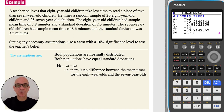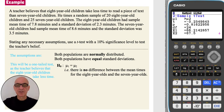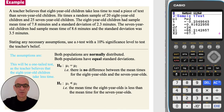The null hypothesis H0 is that the population means are the same — i.e., there is no difference between the mean times for the eight-year-olds and the seven-year-olds. As the teacher believes that the eight-year-old children take less time to read the piece of text than the seven-year-old children, this will be a one-tailed test. The alternative hypothesis H1 is that the mean time for the eight-year-olds is less than the mean time for the seven-year-olds.